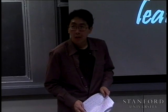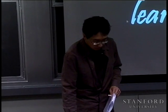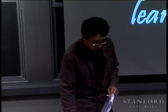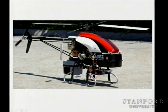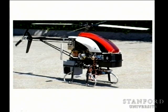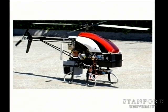As a motivating example, here's an example of the sorts of things we do in reinforcement learning. Here's a picture of an autonomous helicopter we have at Stanford. So how would you write a program to make a helicopter like this fly by itself?